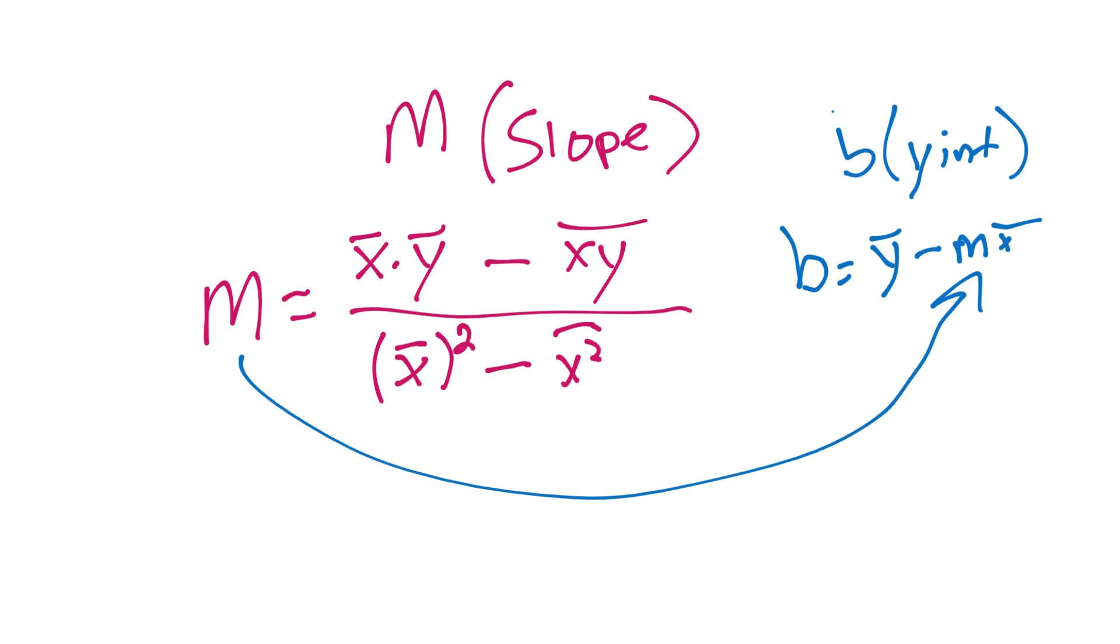So that's how you calculate the m and the b. So again, the line is simply y equals mx plus b. We have our m here, we've got our b here. So now you're ready to go with the calculation of the best fit line given any x's and y's.